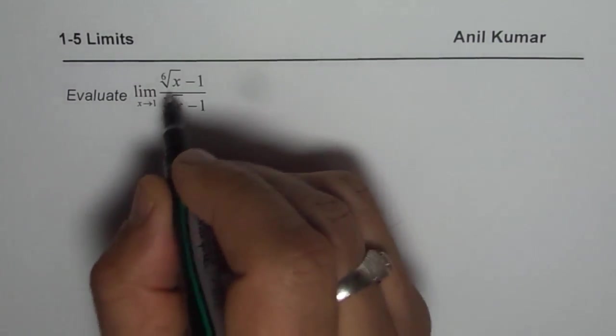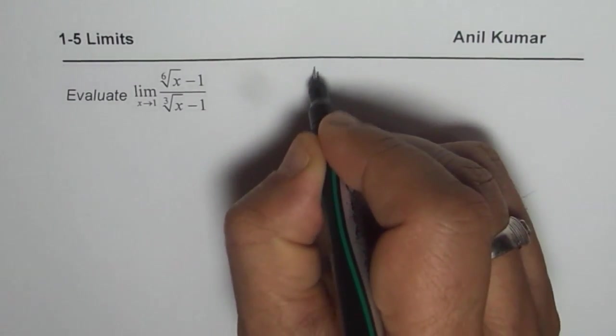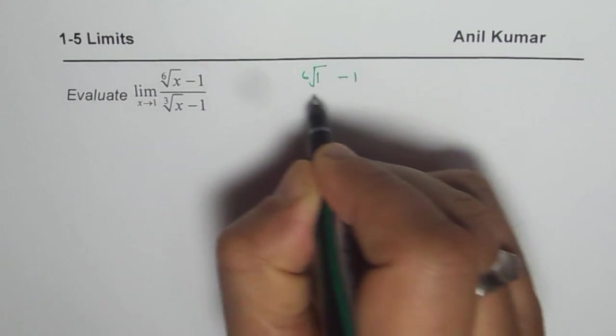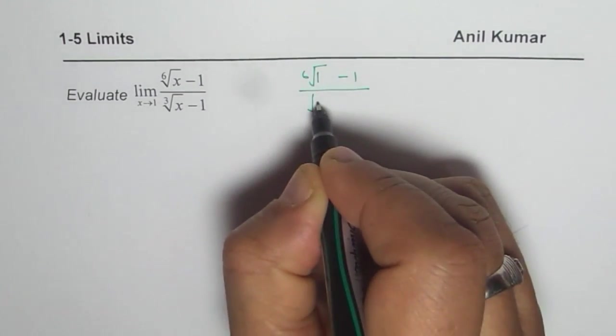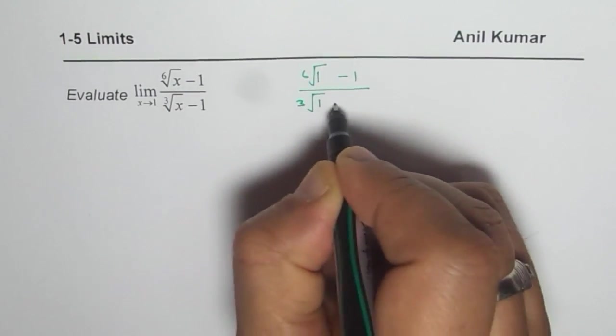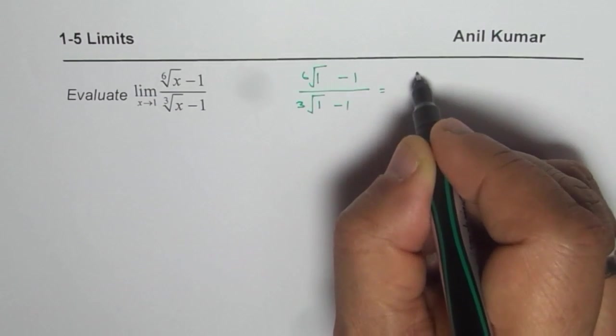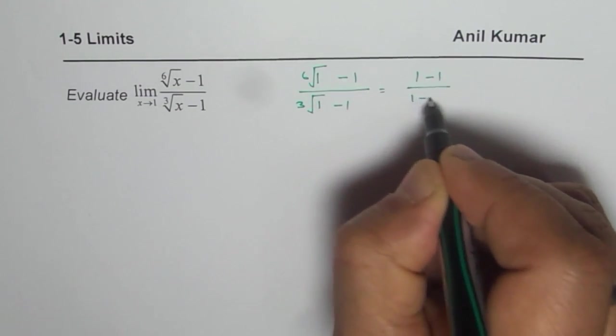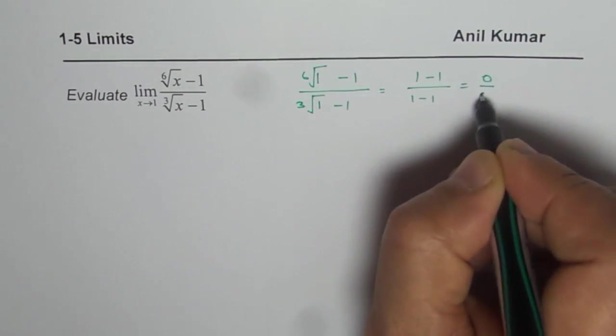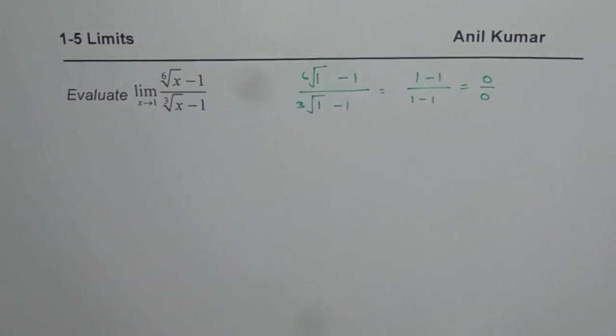If I substitute 1 here, what do I get? I get 6th root of 1 minus 1 divided by cube root of 1 minus 1. These roots are also 1. So we get 1 minus 1 over 1 minus 1, which is 0 over 0, undefined. It is basically indeterminate form.